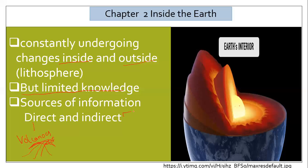Now we talk about the indirect sources. The first is earthquakes. We have made a seismograph — an instrument that records seismic waves. By studying these waves, we can determine whether the rock inside is hard, soft, or melted. We also look at gravitation as an indirect source.